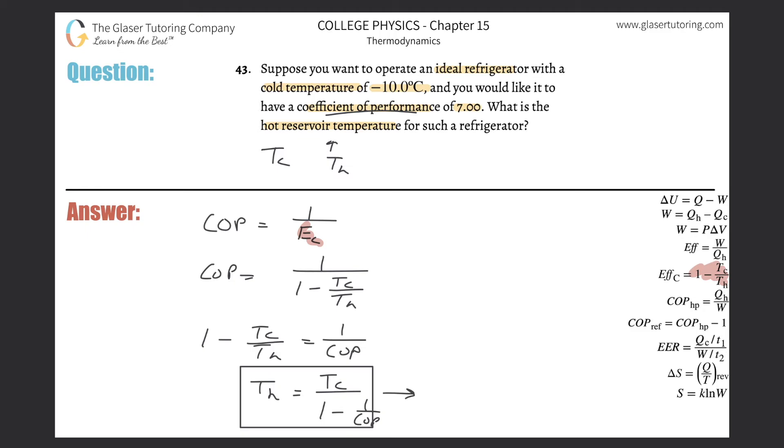So temperature of the cold was negative 10, but remember you need that in terms of Kelvin, so you got to add the 273 to that, and then simply divide that now by one minus one over that coefficient of performance which they told us was 7. And let's see what we get. So it's going to be basically 263 on the top, right, divided by then parenthesis one minus one divided by 7, then we get about 307 or so.